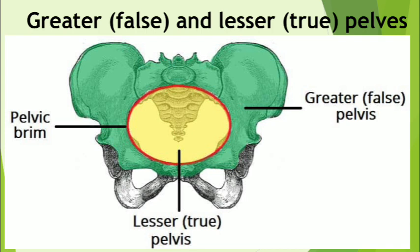The pelvic brim is formed by the sacral promontory and ala of the sacrum — the superior surface of the lateral part of the sacrum adjacent to the body. The pelvic rim is also formed by the right and left linea terminalis, which form a continuous oblique ridge on either side. The linea terminalis is made up of the arcuate line and the pecten pubis or pectineal line.